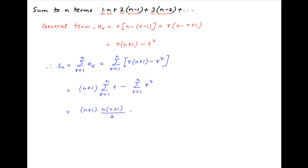Now summation r is equal to the sum of the first n natural numbers which is equal to n times n plus 1 upon 2, and summation r square is equal to the sum of squares of the first n natural numbers which is equal to n times n plus 1 times 2n plus 1 upon 6.